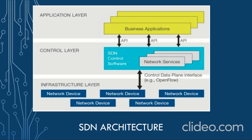Let us understand the architecture of software-defined networking in detail. The SDN consists of three layers. The first layer is known as the application layer. The second layer is the control layer. And the third, or final, layer is known as the infrastructure layer. The application layer is the layer which end users see — it is the layer upon which IoT devices reside. This layer consists of all the business applications being run on our IoT devices, and it is the layer through which the user interacts with IoT devices on our network. This application layer is connected via Application Programming Interface, or API, to the control layer.